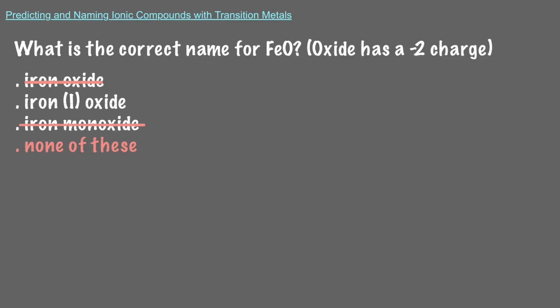And while there's only one iron ion, the roman numeral isn't about the number of ions. It's the charge of the iron ion. Here, we know that the iron cation needs to be iron 2+, since the oxide is O2-, and compounds are neutral. So this is iron (II) oxide.